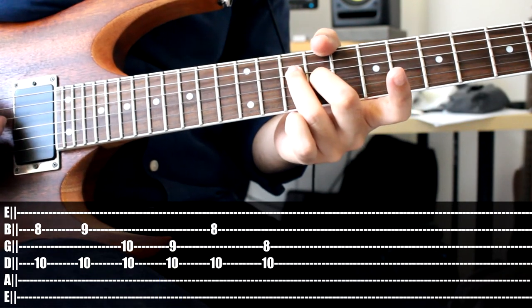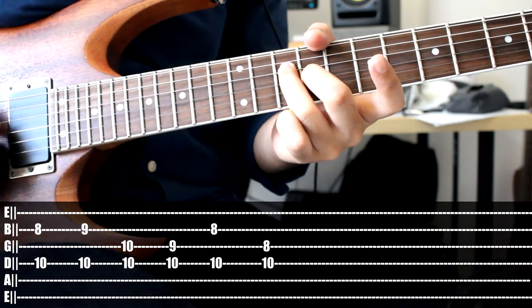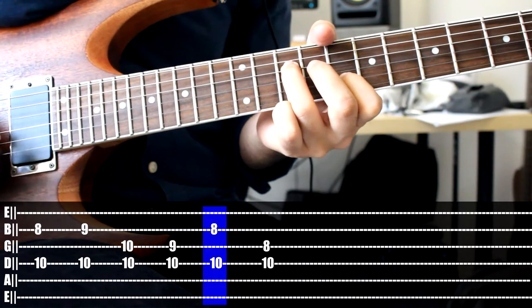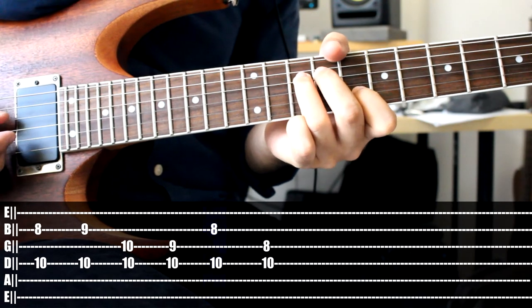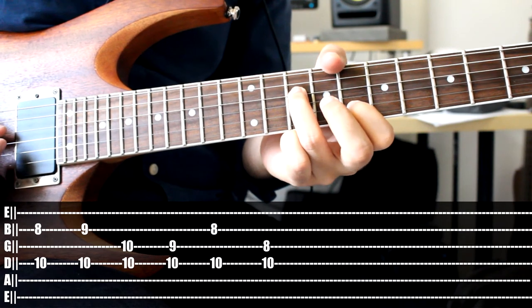From there we're going to move again back to 10-8, that's 10 on the D remaining with our ring finger there and index finger 8 on the B. And then shift your index finger to the 8 from the B to the G.